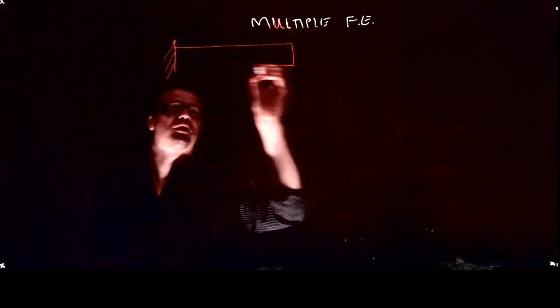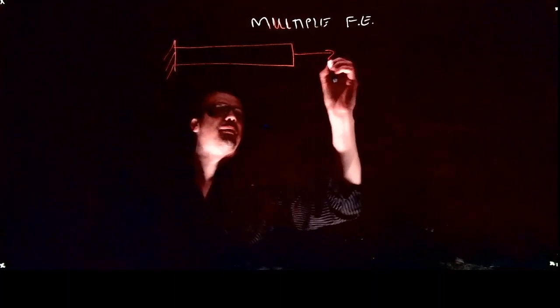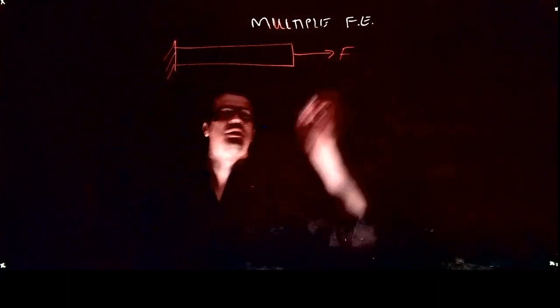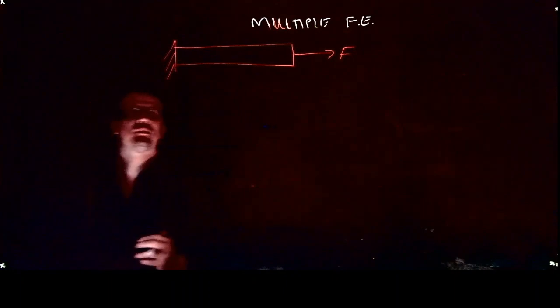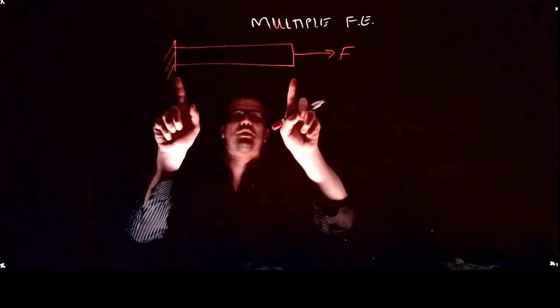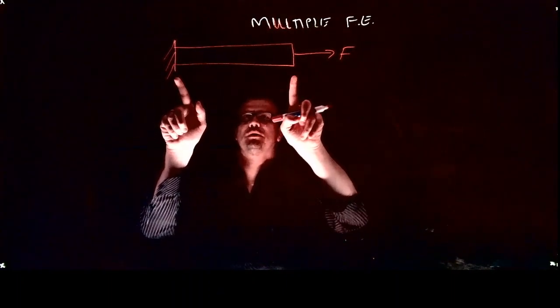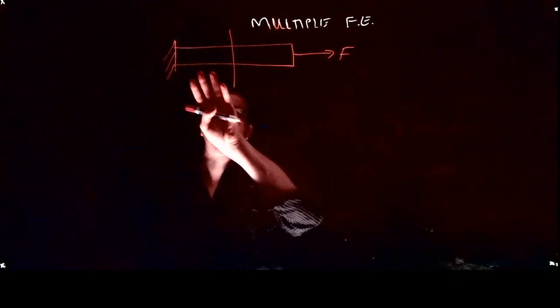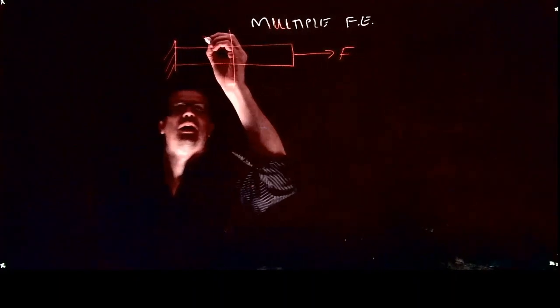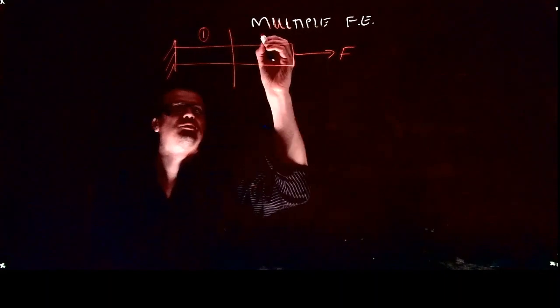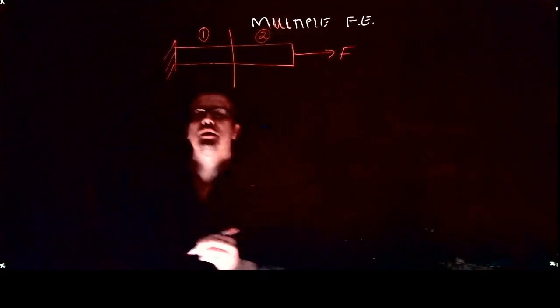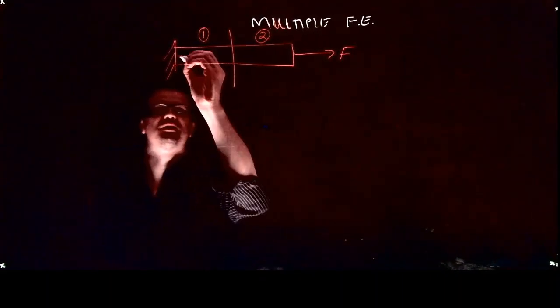We have a big structure here with loading where we applied some forces. We've seen this before. In the past, we modeled this whole structure with a single finite element. Now we're going to break it down and model it with two finite elements. This will be finite element one and this will be finite element two. Then we're going to mesh each element.